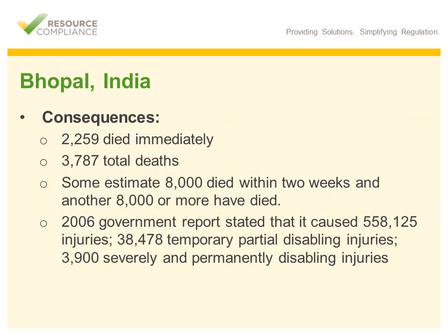The consequences of the MIC leak were absolutely devastating. 2,200 people died immediately, and the total official death toll is nearly 3,800, although many experts believe that more than 8,000 died within two weeks and another 8,000 died later as a direct result of the accident. A 2006 government report stated that it caused over half a million injuries, 38,000 partially disabling injuries, and 3,900 more permanently disabling injuries. The consequences of this event were devastating.